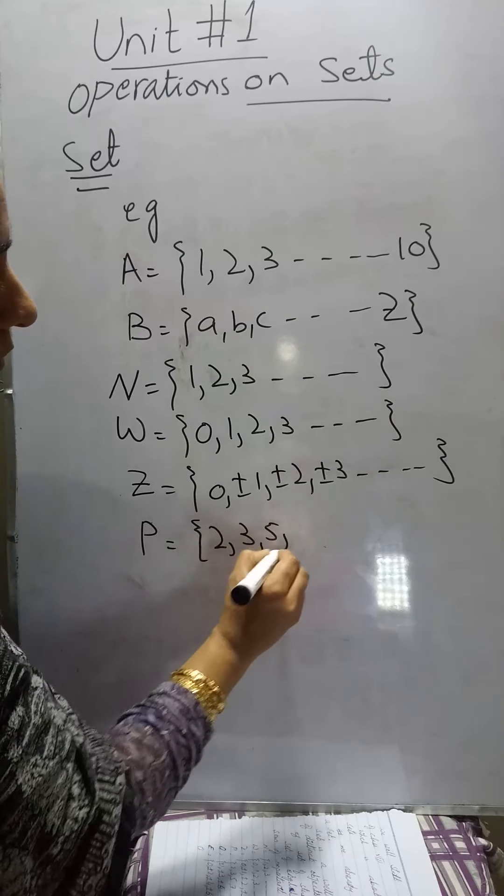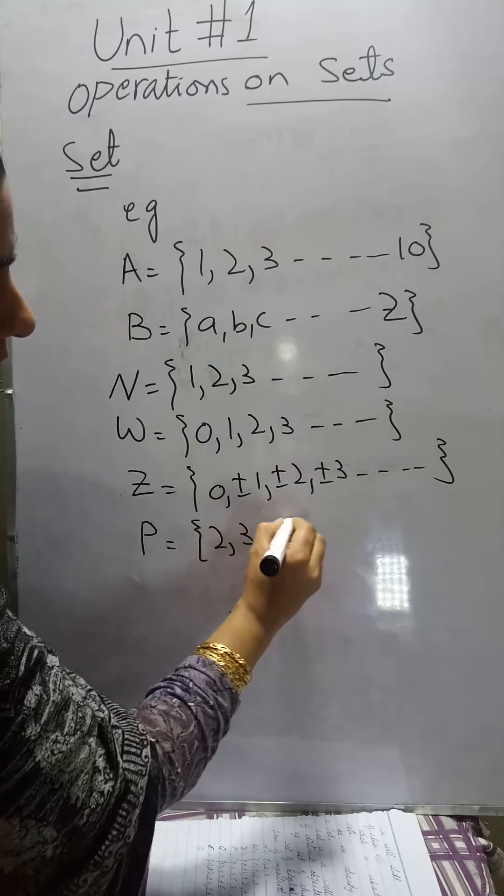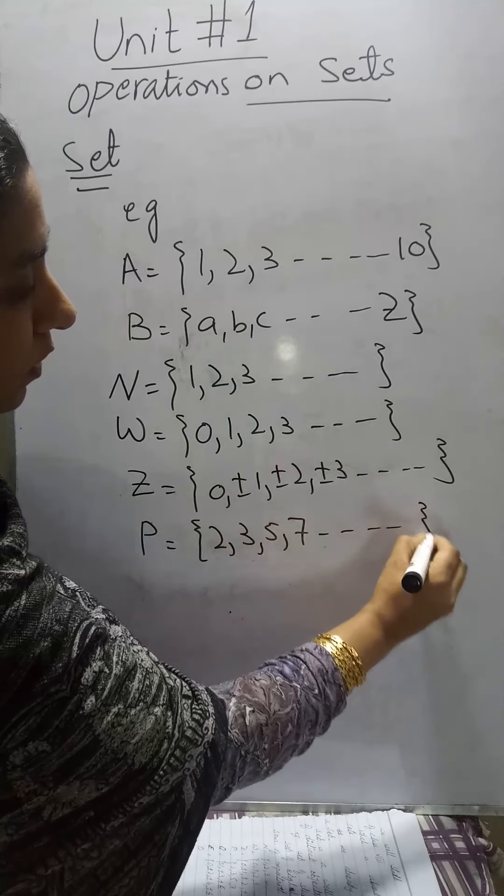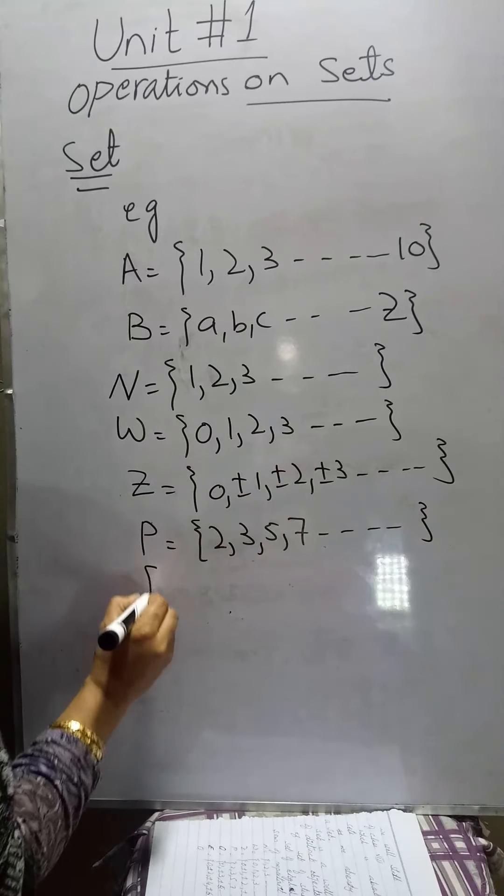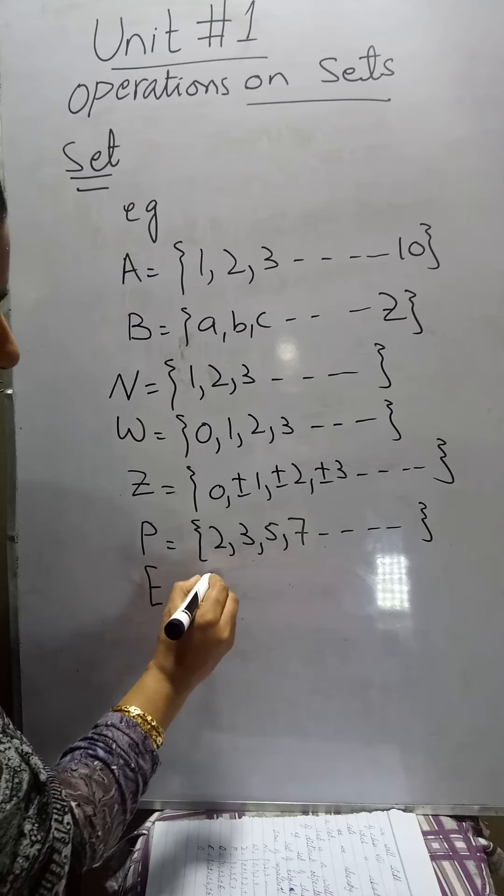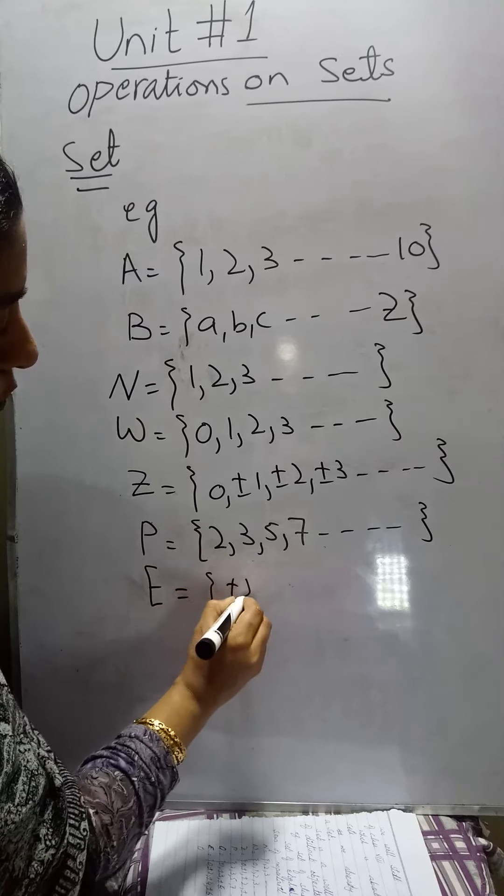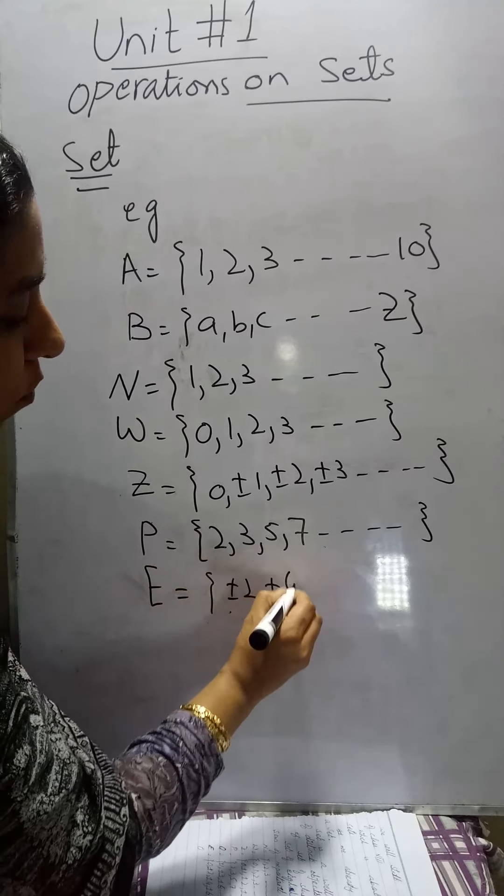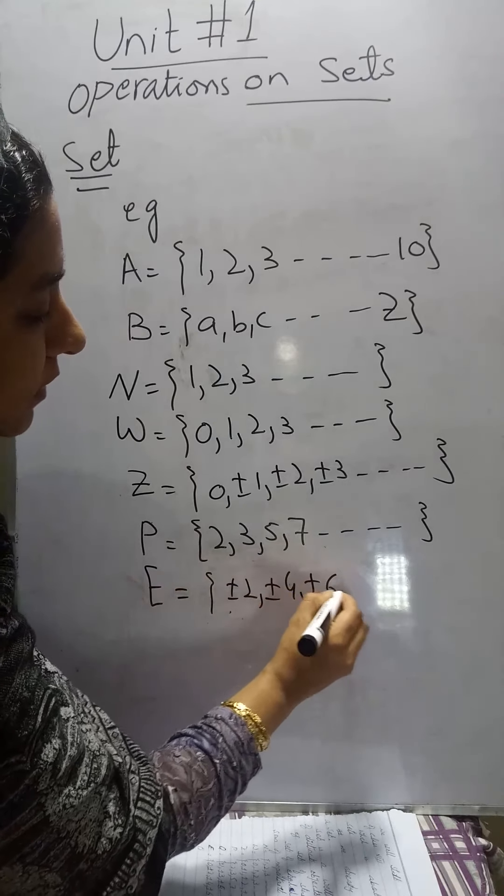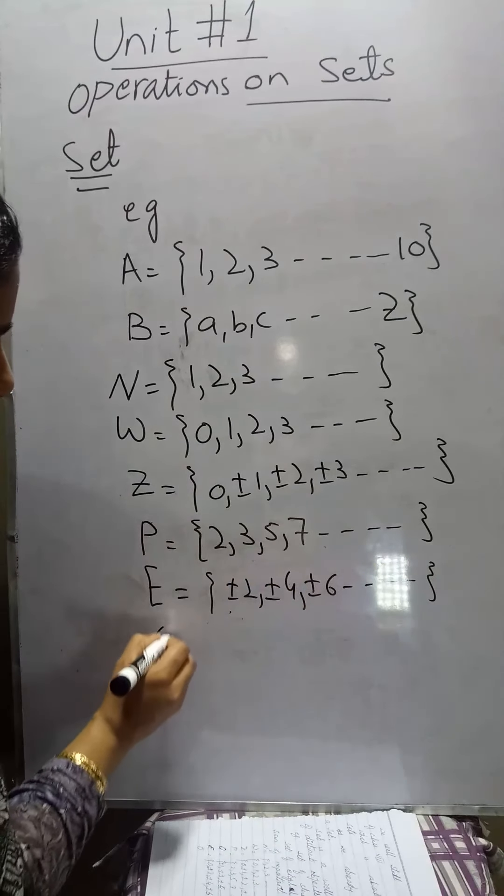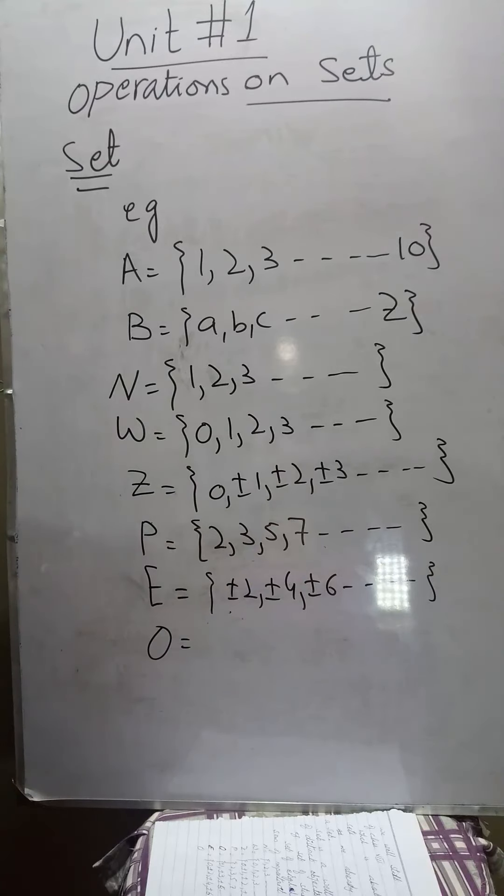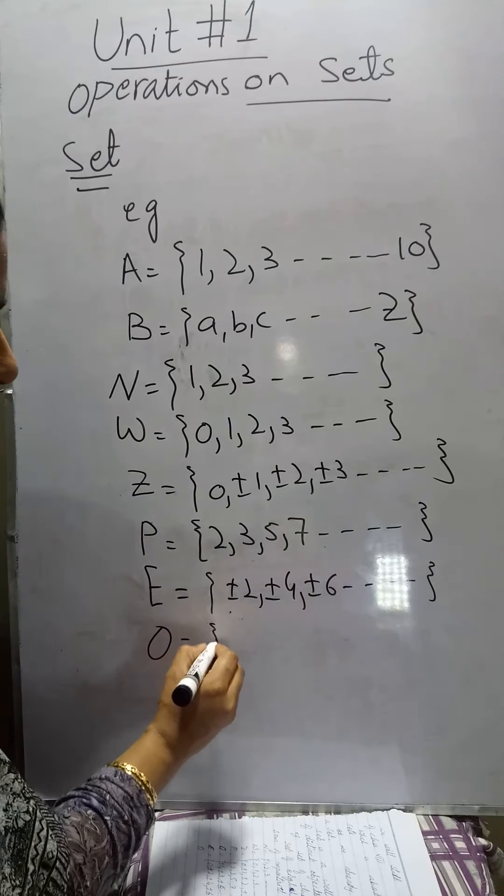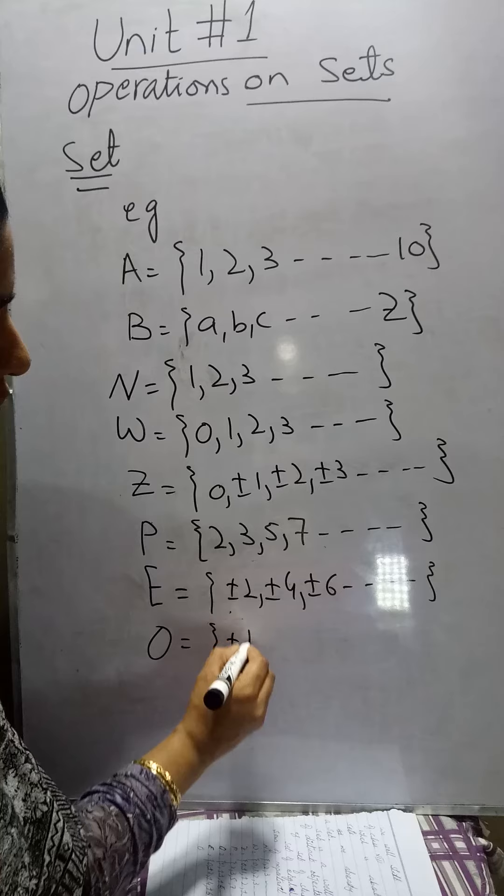The set of prime numbers represented by the letter P, and is 2, 3, 5, 7 and so on. The set of even numbers written as E: plus minus two, plus minus four, plus minus six and so on. The set of odd numbers represented by the letter O, and is given as plus minus one, plus minus three, plus minus five and so on.